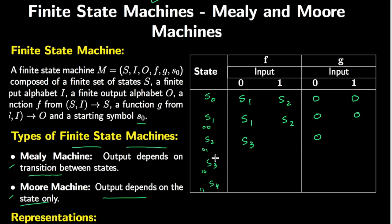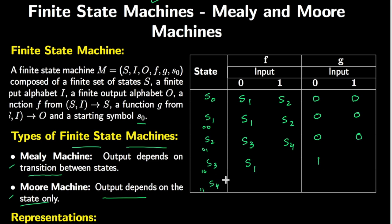If I am at s2 and a 1 comes, I go to s4 which is 1,1, and the output is 0. For s3, if a 0 comes, the first symbol is flushed out, I go to s1 which is 0,0, and my output is 1 because that is the symbol flushed out. If a 1 comes at s3, I go to s2.